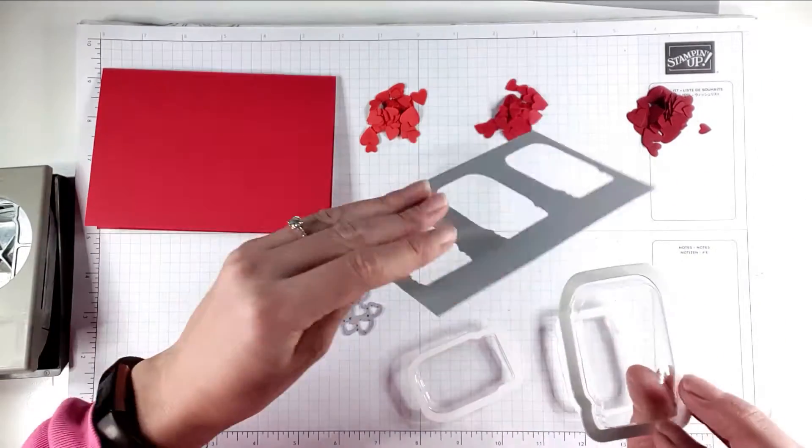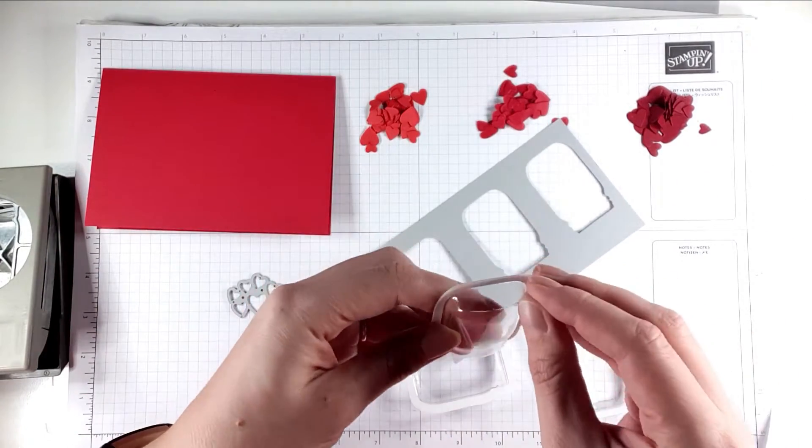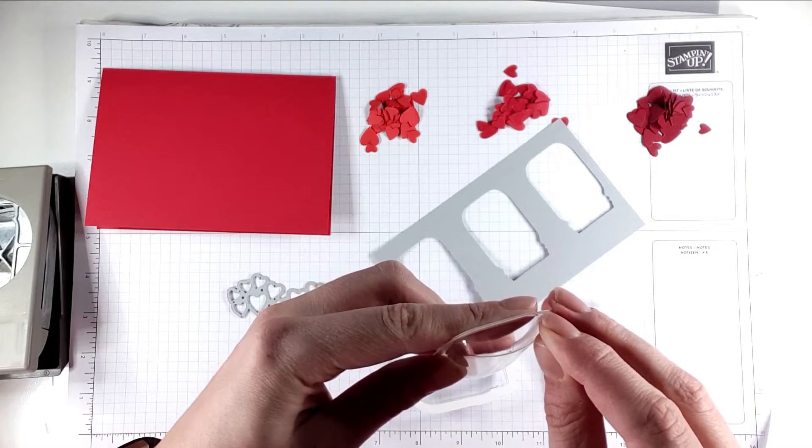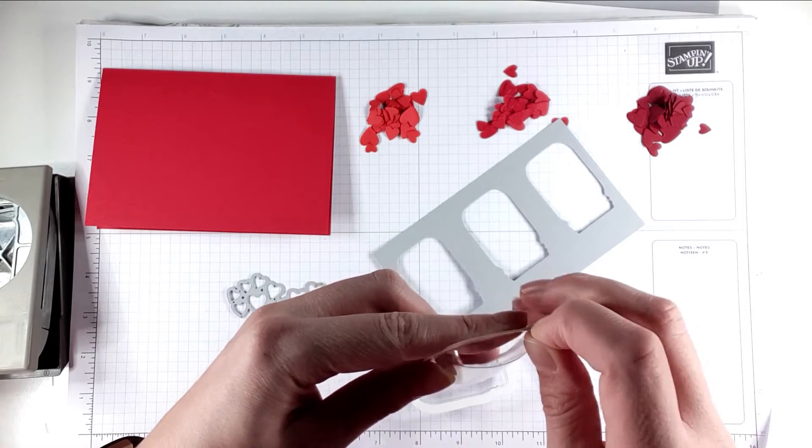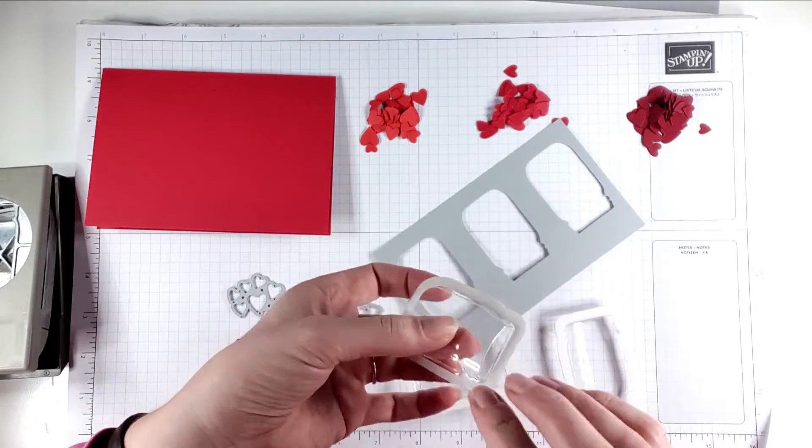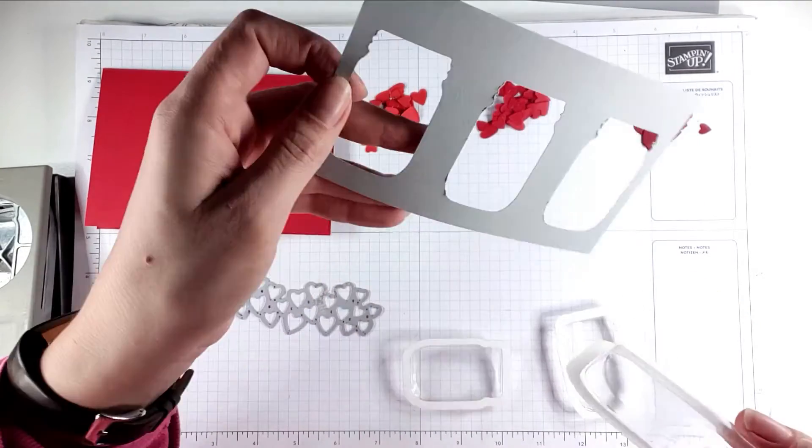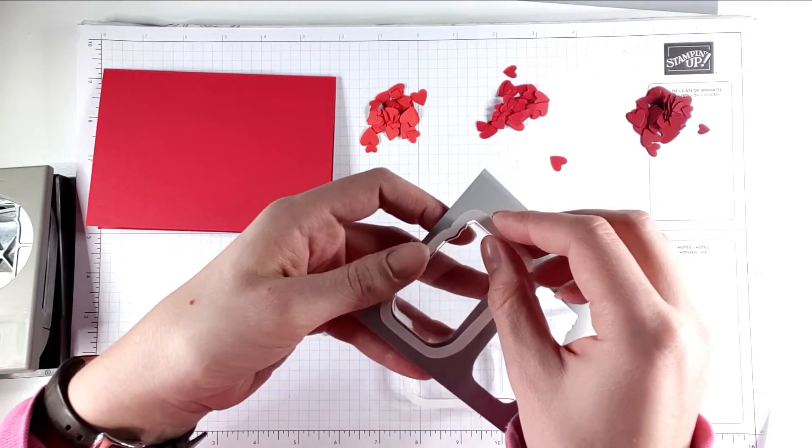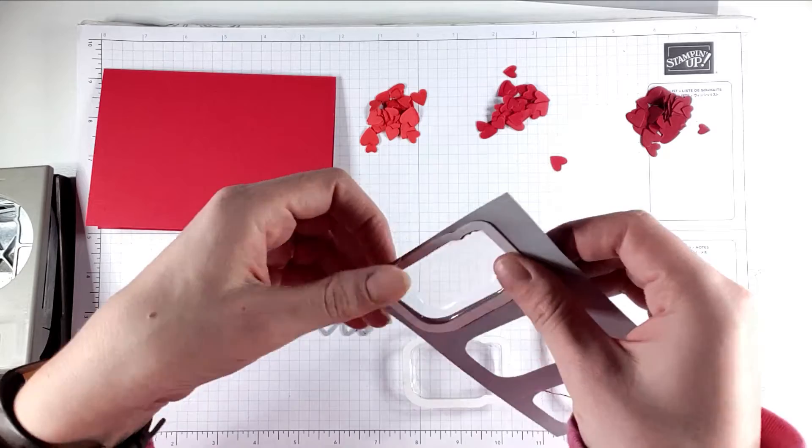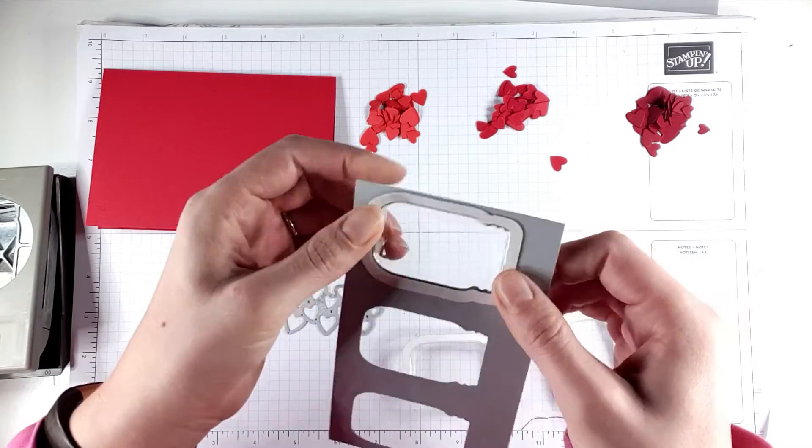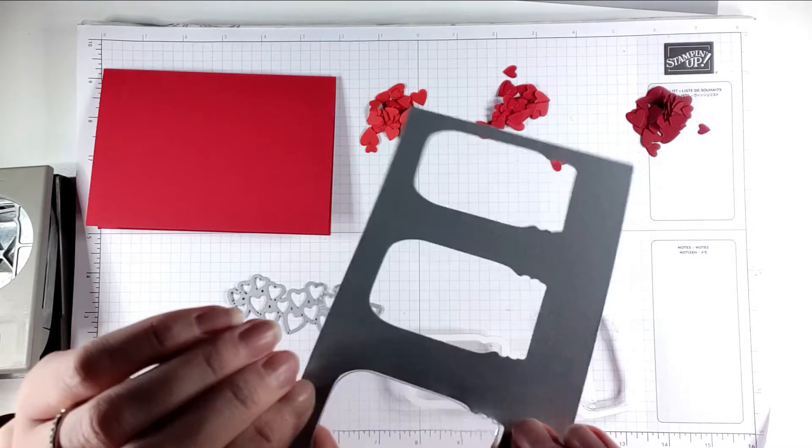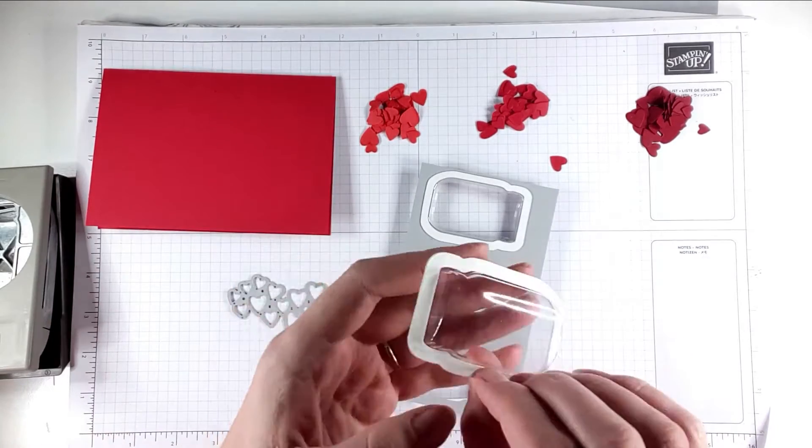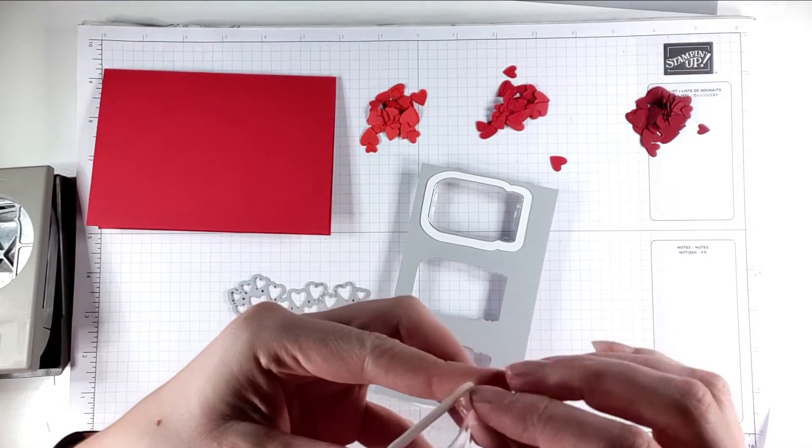These shaker domes have double sided sticky, so they've got one on the front and one on the back. I'm just going to peel off the front ones and I'm just going to pop them through here. That then has a nice seal onto my cardstock.